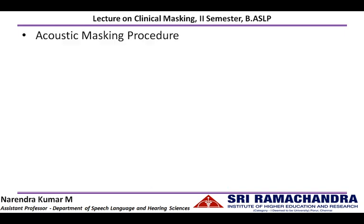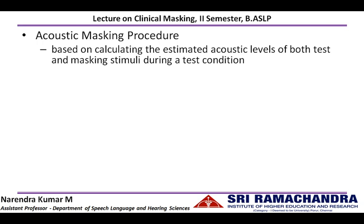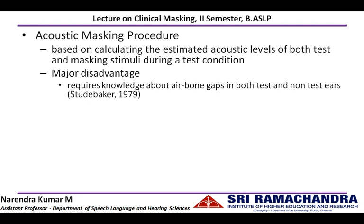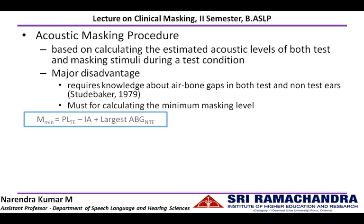Moving on to the acoustic masking procedure. This procedure is based on calculating the estimated acoustic levels of both test and masking stimuli during a test condition. It involves various formulas used to calculate the masking level to be delivered to the non-test ear. The major disadvantage of this procedure is that it requires knowledge about the air-bone gap in both test and non-test ears to calculate the minimum masking level. Leiden et al. gave a formula for calculating the minimum masking level to be presented in the non-test ear, which equals the presentation level in the test ear minus IA plus the largest air-bone gap in the non-test ear.